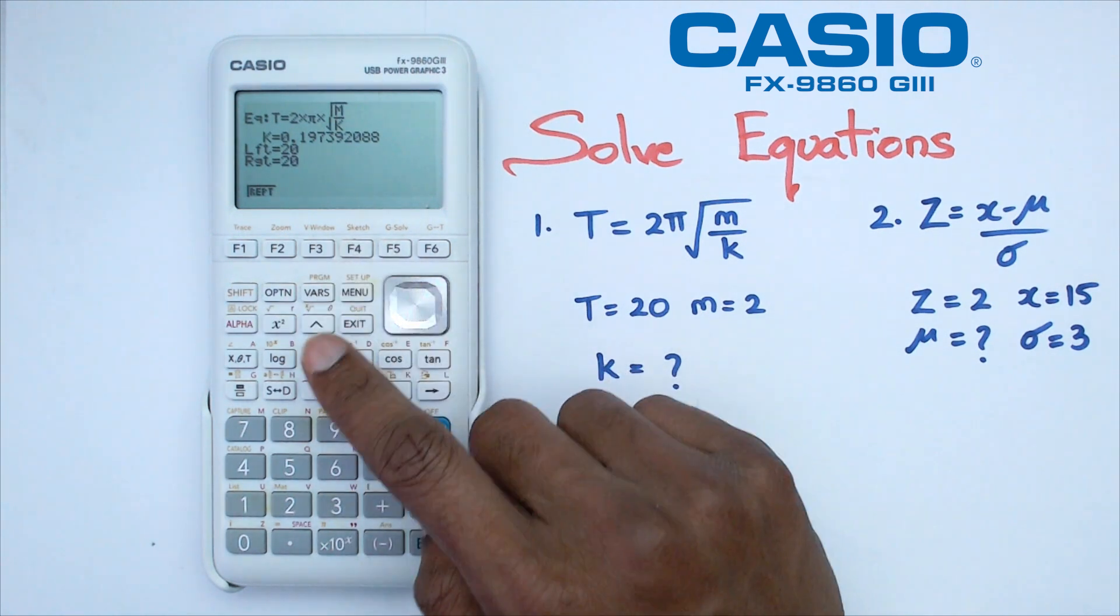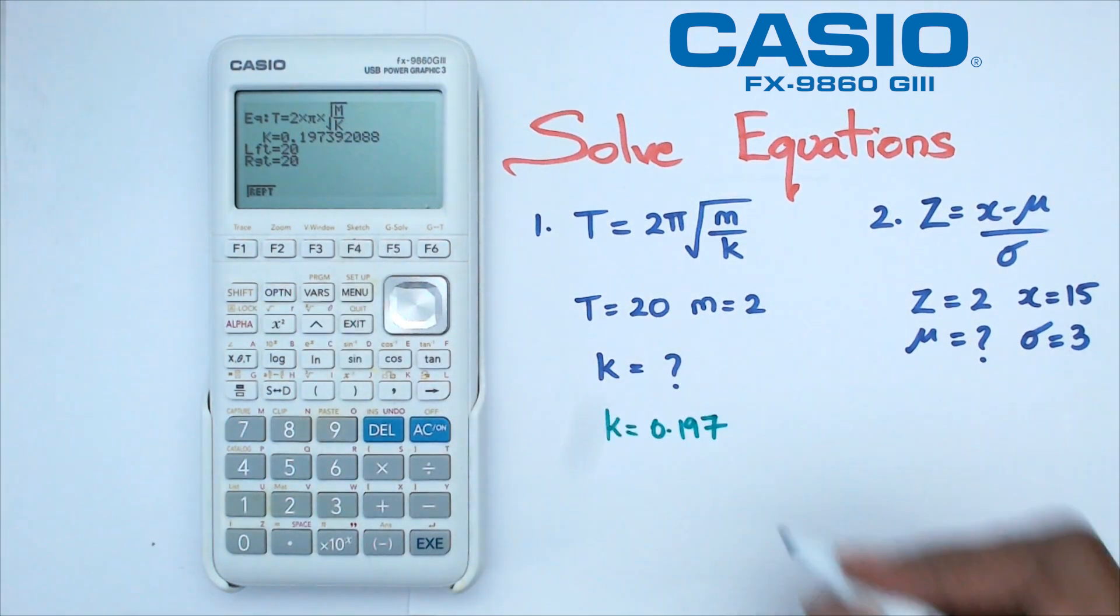Right now, it tells me that k is equal to 0.197. Let's go 0.1974.